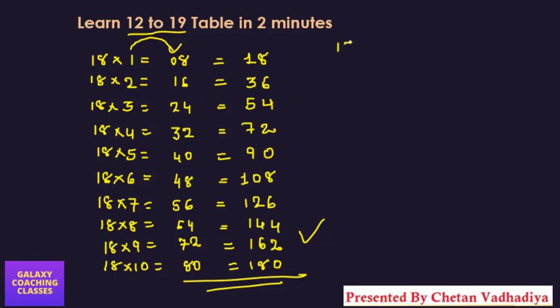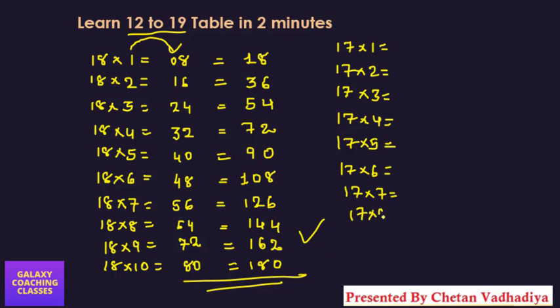Now let us solve of 17. So 17×1=17, 17×2. Now directly without this table I am going to write down. So 17×3, 17×4, 17×5, 17×6, let me write down equals to also, 17×7, 17×8, 17×9, and 17×10.